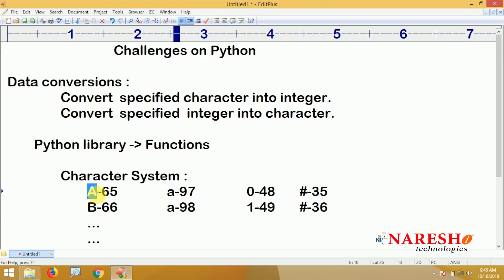Whenever we are specifying a character, it will return the value 65. That is converting character into integer. What is the function? That is your task. If you specify 65, it will return that character.